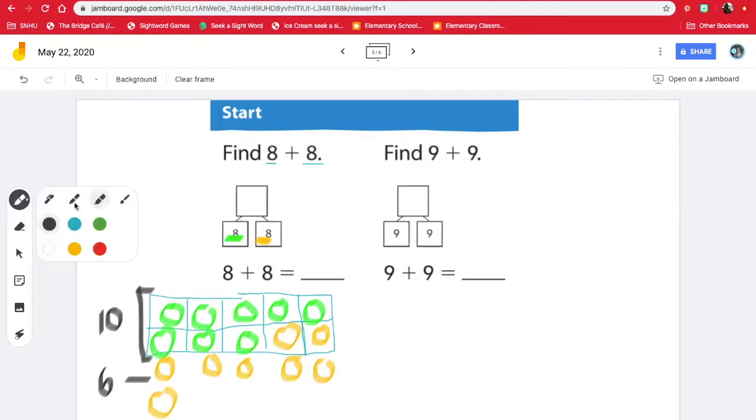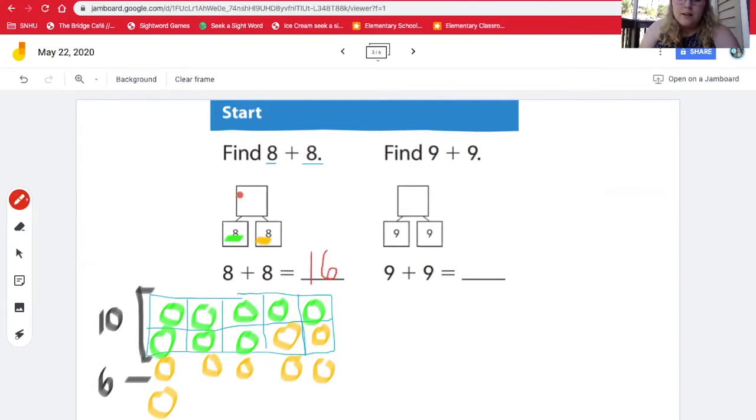So we need to add, what's 10 plus 6? Well, I could use my fingers. So let's put 10 in our calculator and count on until we have six fingers up. So we have 10, 11, 12, 13, 14, 15, 16. So our answer is 16. 8 plus 8 equals 16. There we go.